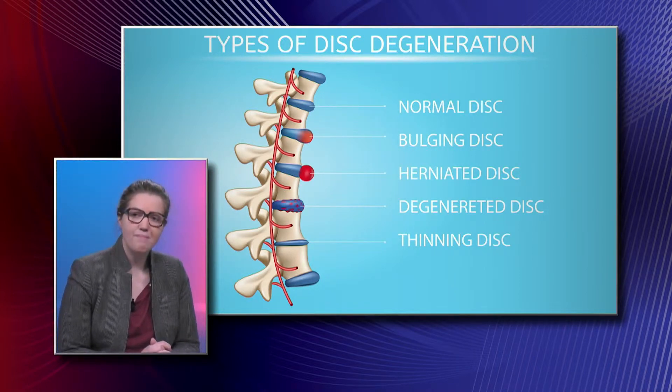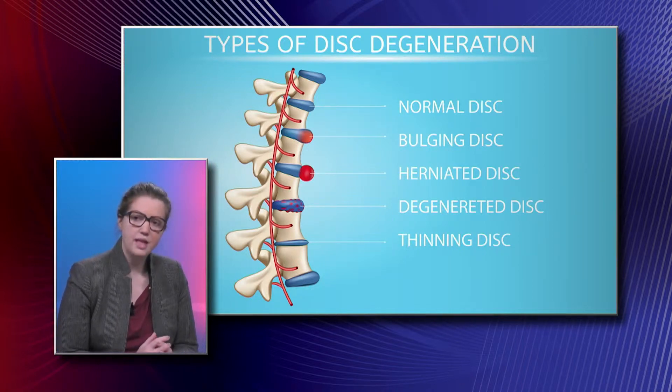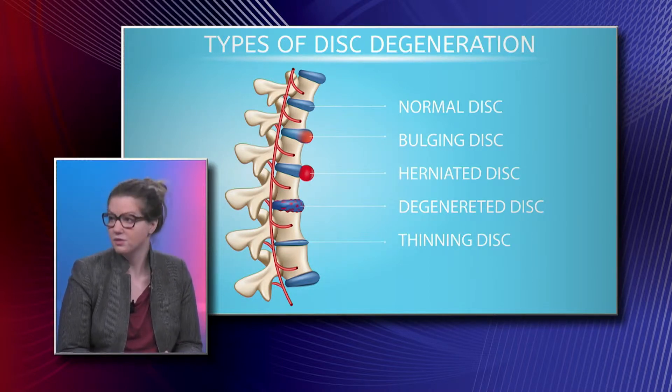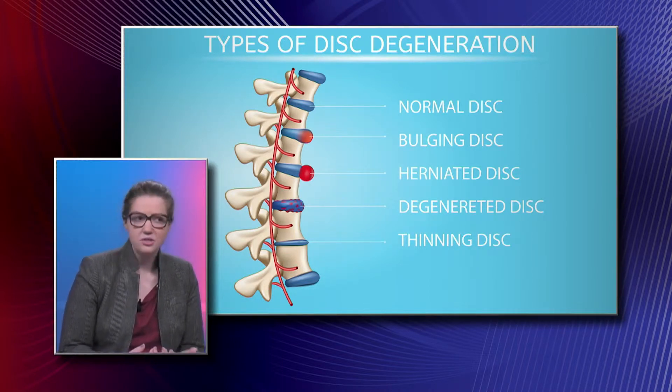Degenerated discs generally cause back pain as opposed to leg pain, although they can cause both. Think of it like a hip or knee replacement — in your spine it's much the same thing. If your parent had knee arthritis, you can have back arthritis because the cartilage or disc material is wearing down. A herniated disc more commonly causes leg pain, while a degenerative disc predominantly causes back pain.